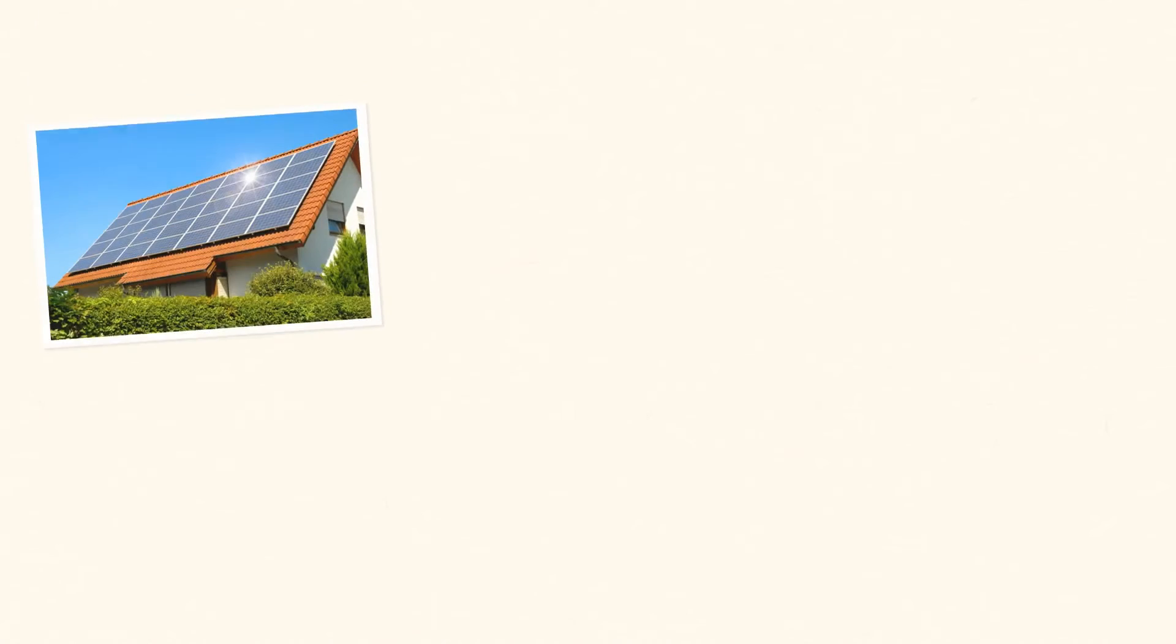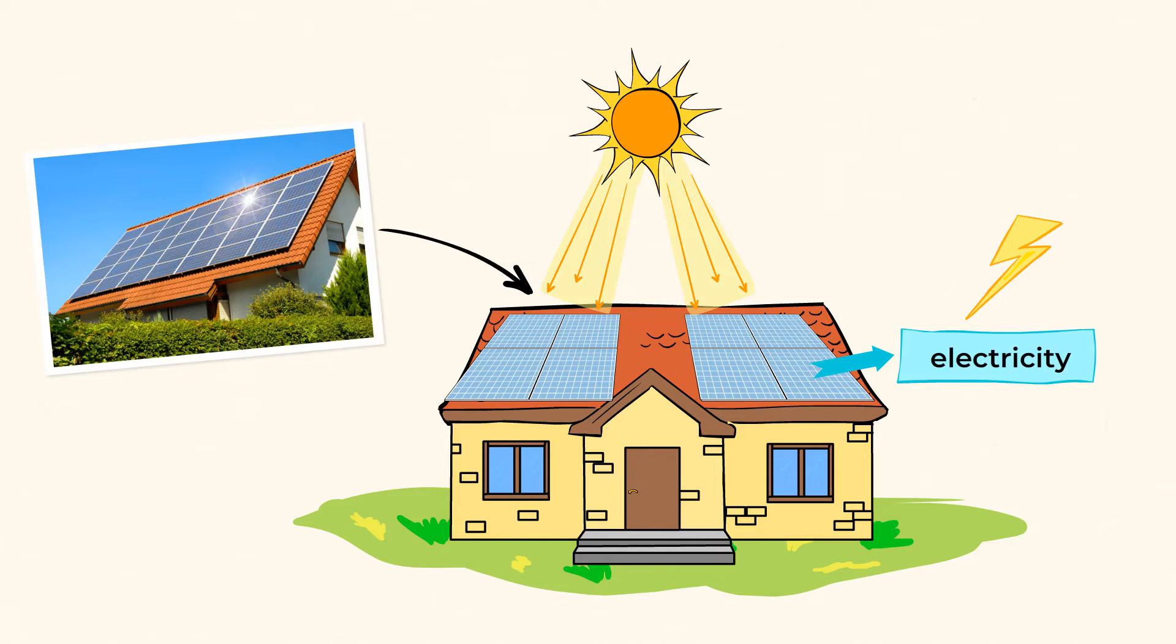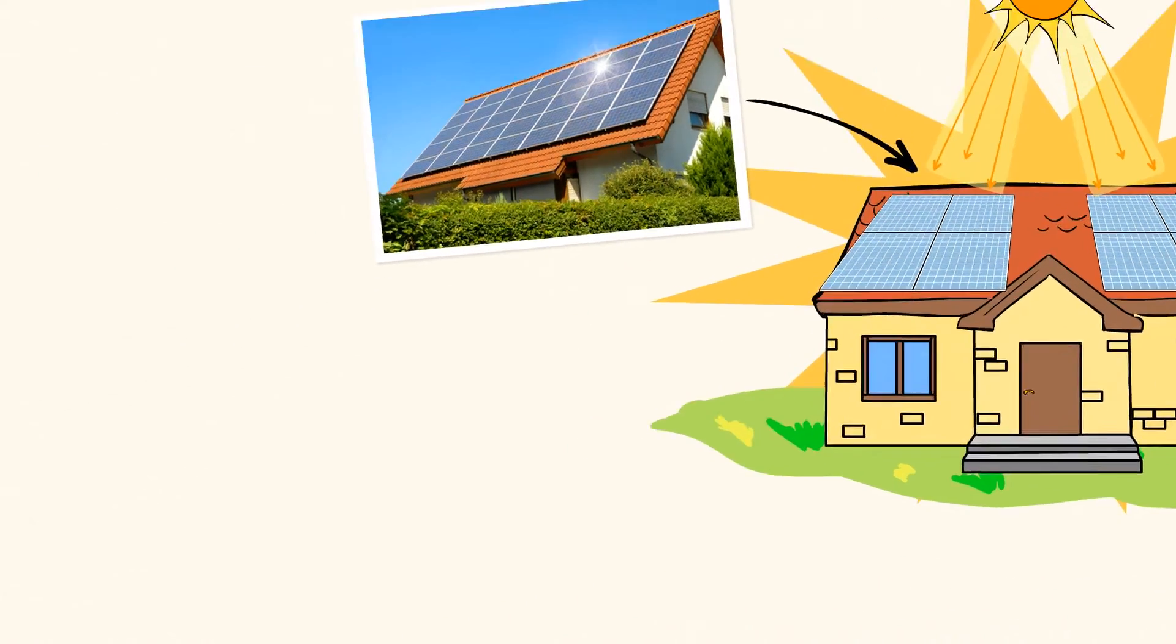Now, on a much larger scale, solar roof panels do the same thing. The sun shines on the solar panel, and the energy from the light of the sun is changed into electricity. Solar panels can generate enough electricity for an entire house. Pretty amazing, huh?